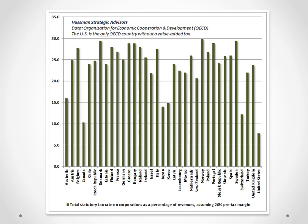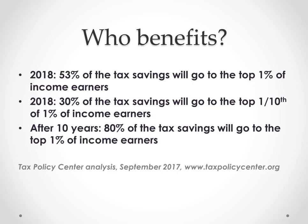Regardless of whether a tax is raised from consumers or producers, the impact of that tax will fall partly on both. But the current tax proposal is so laser-focused on cutting taxes on profits that an even wider disparity between the rich and the middle class is virtually certain. In fact, more than half of the tax benefits in this plan will go to the top 1% of income earners, and 30% of the benefits will go to the top one-tenth of 1% of income earners.